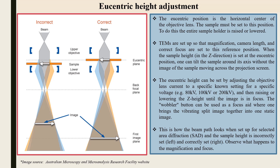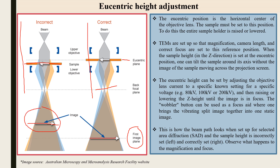Sometimes the wobbler button is used to help set the correct focus. The objective lens current setting depends on the voltage. Looking at the left and right side images: the incorrect case shows the image formed above the image plane. When correctly set at the eucentric plane with the correct crossover at the back focal plane, the image is formed on the first image plane — giving correct focus, correct magnification, and correct resolving power. The eucentric height adjustment is the most important preliminary step.